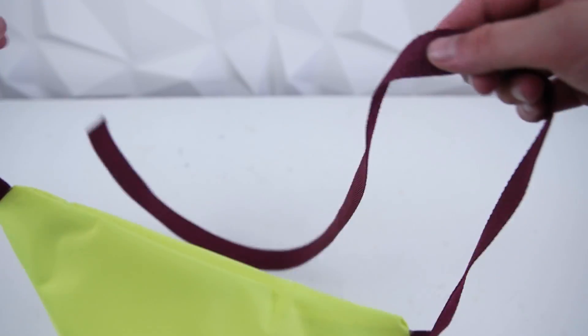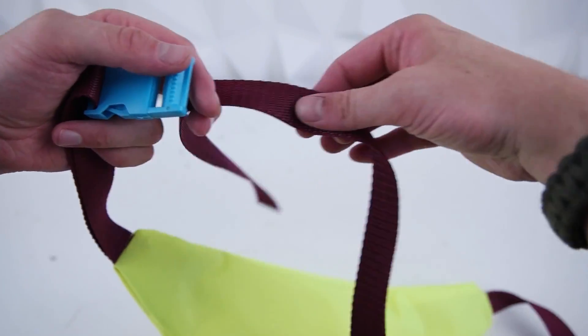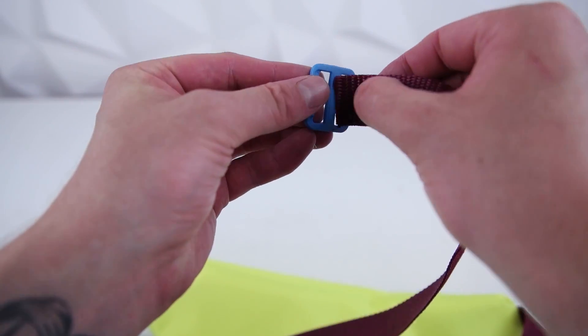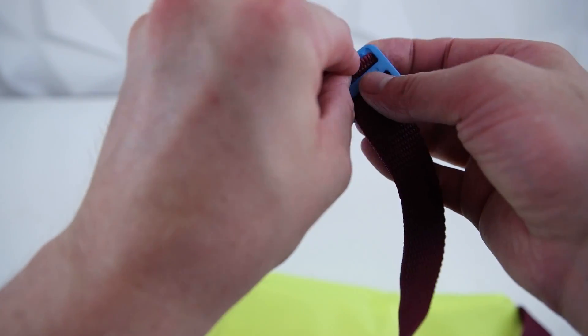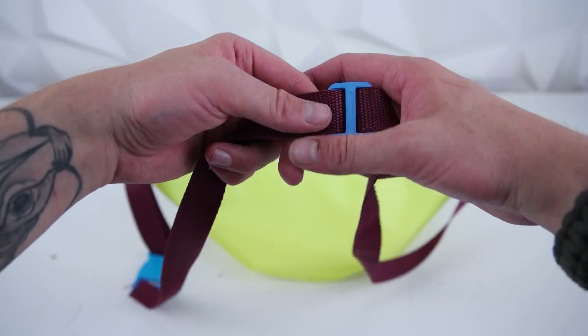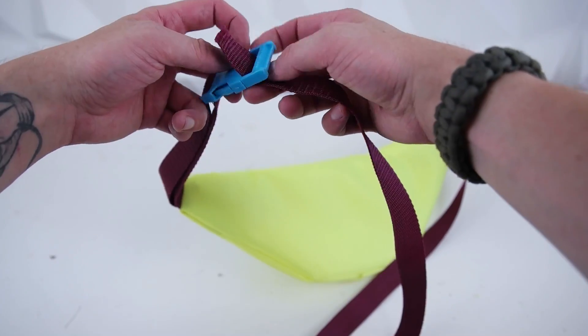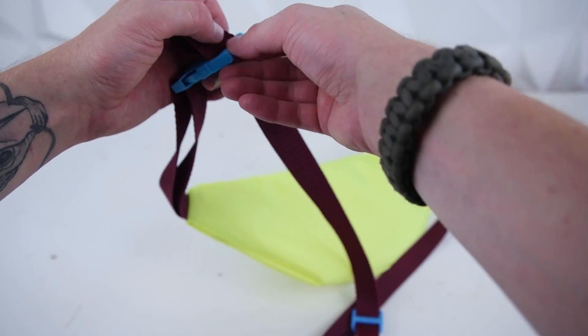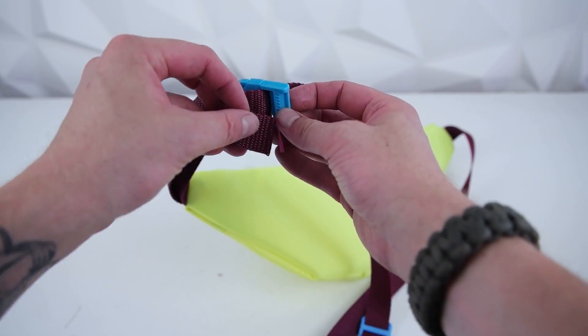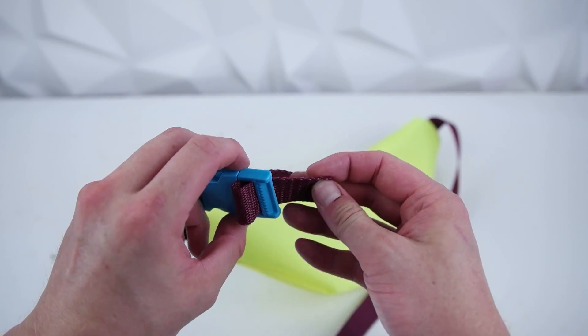Next, we're going to be finishing up the buckle. What you're going to do is add your adjuster on—just feed it in and back out. Pull it through a little ways and then do the same thing on the other side of the buckle, and then bring it back through on the opposite side, in and back out of the adjuster.